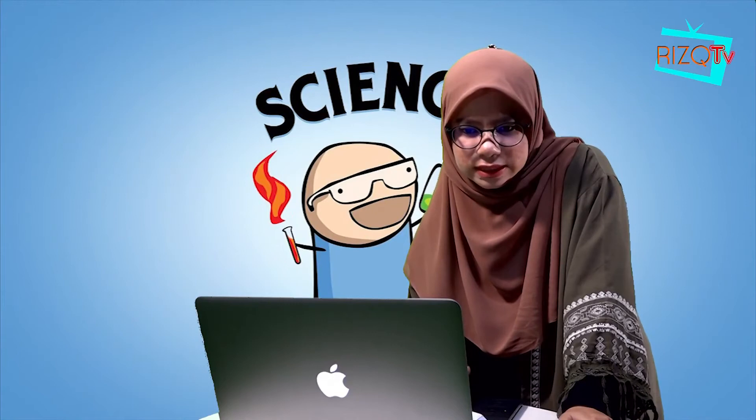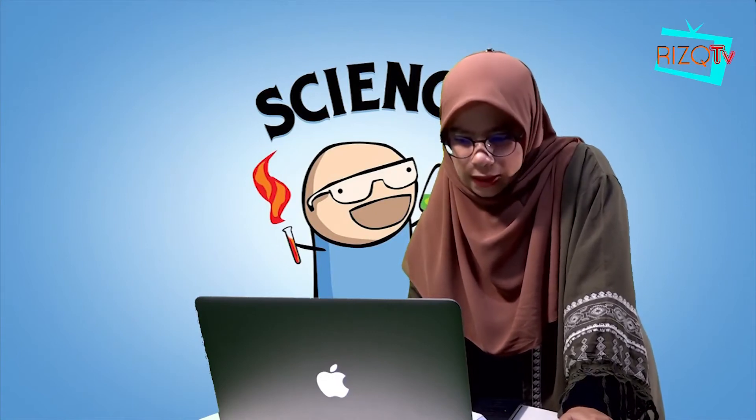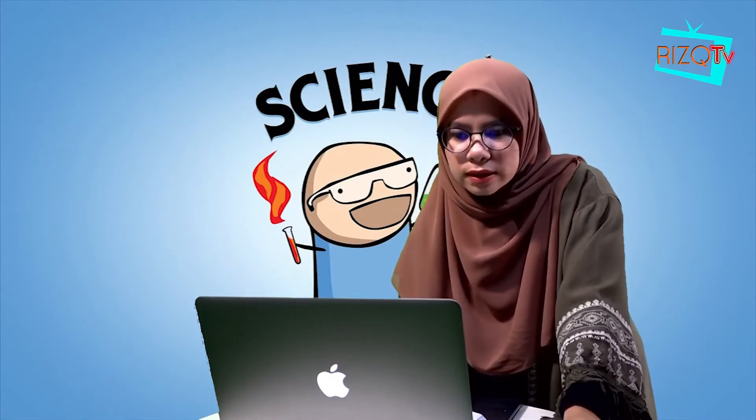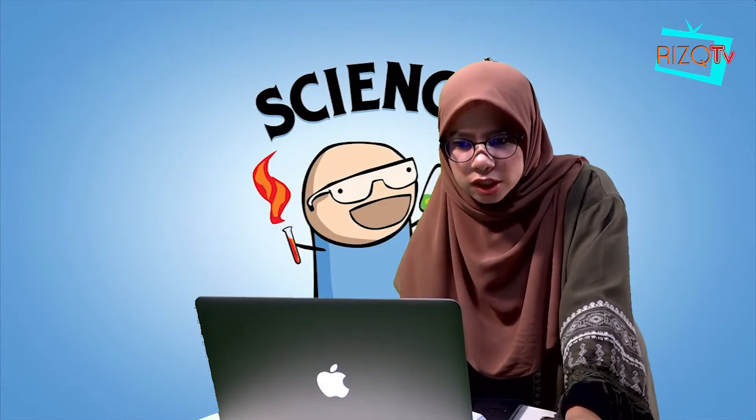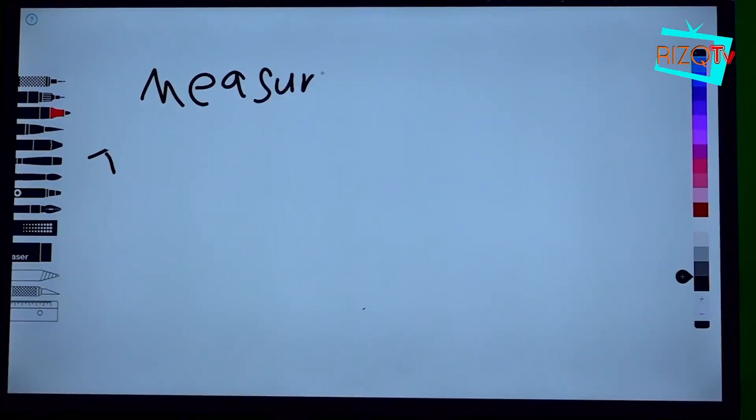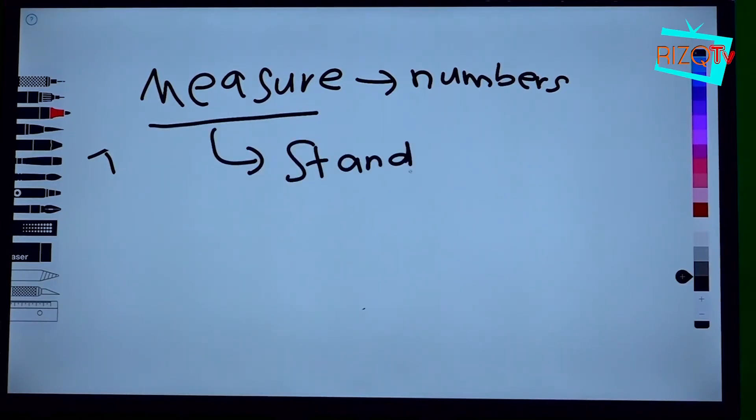The third science process skill is measuring. You measure and while you measure, you need to use numbers. We are in the modern era, so make sure you measure using standard tools. What does it mean by standard tools?